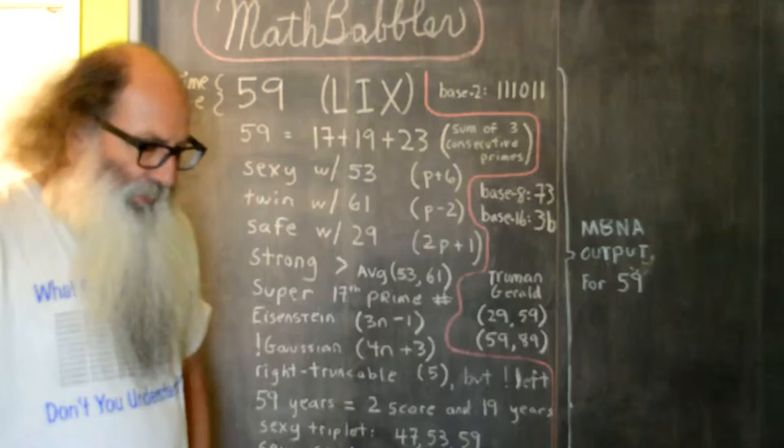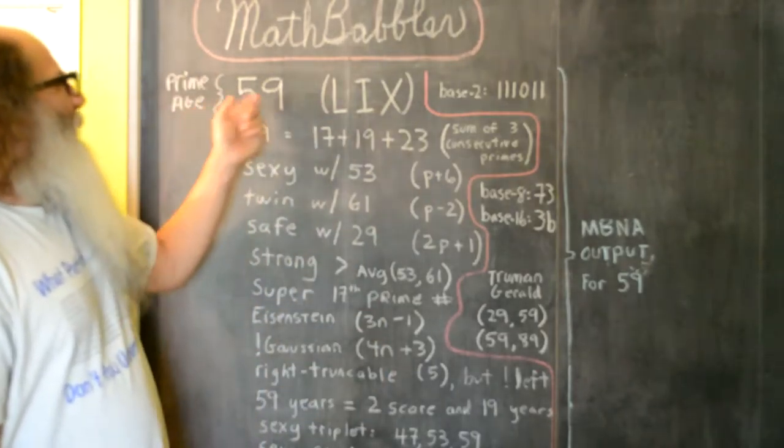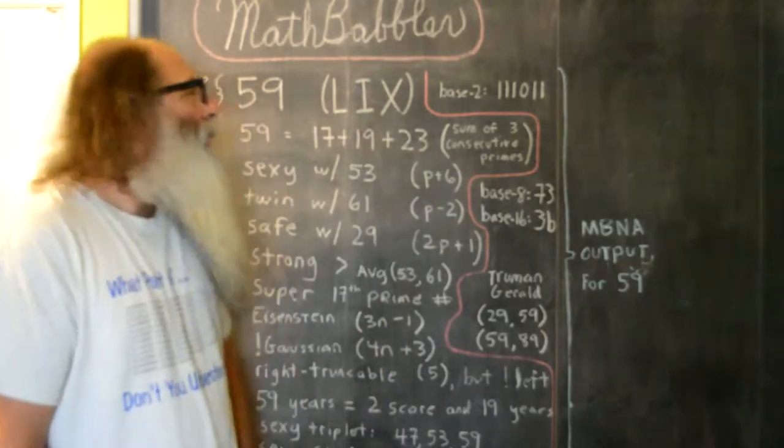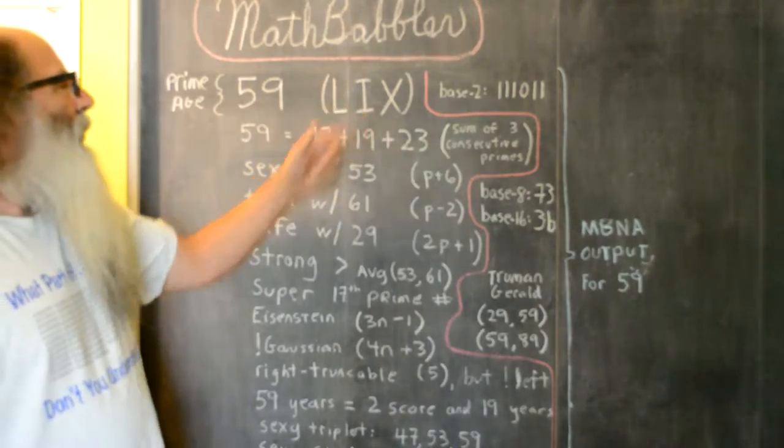So let's just kind of go through this a bit. First off, 59 is a prime number, and as a Roman numeral it's LIX.